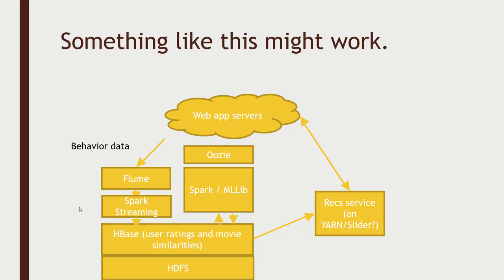Storm would also be a perfectly appropriate solution as well. Now we've got to dump that behavior data somewhere, and since we're dealing with small little records, HBase seems like a good solution here. Originally we talked about Cassandra as well, and that could work too — Cassandra would be a perfectly good alternative or something similar.